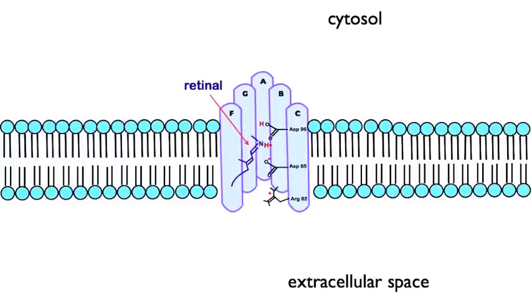Within the alpha helices is a chromophore called retinal which is covalently bound to the polypeptide chain. Retinal is part of what gives these Archaea their red color.